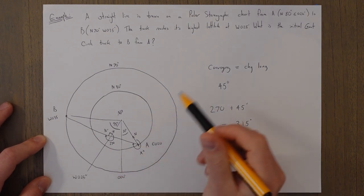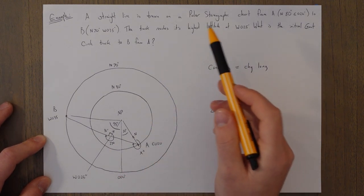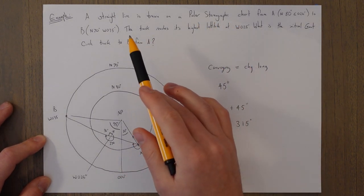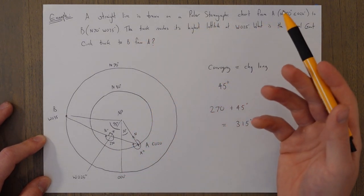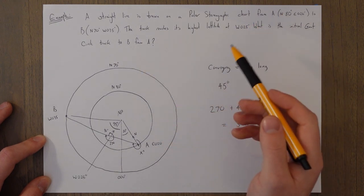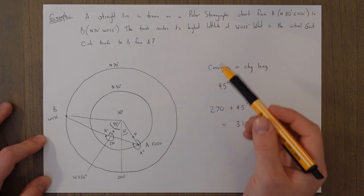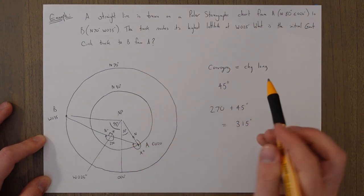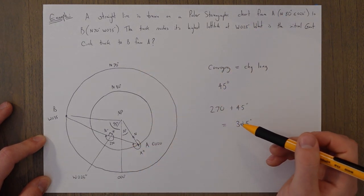Initially it looks quite complicated, but with this additional information you should know that the highest latitude — the vertex — is always purely east or purely west.